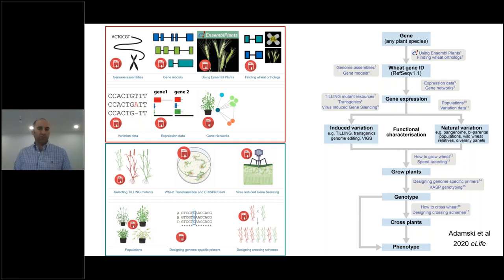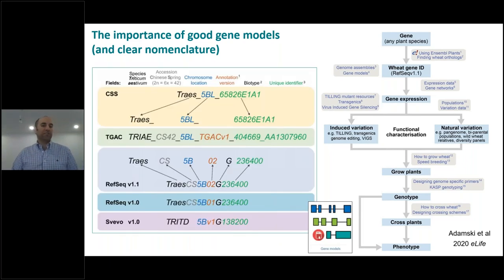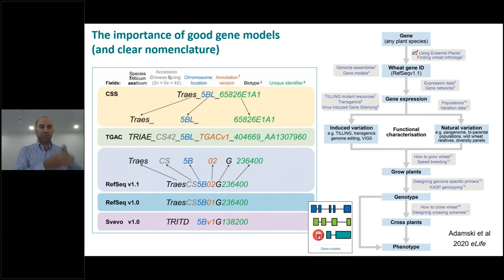One of the critical things is that we have a common nomenclature. We had several iterations of gene models: CSS gene models, TGAC gene models, RefSeq version 1, version 1.1 gene models. Having gene models that are stable has been really important because now we can talk the same language, which is crucial when comparing studies done in Australia, China, Japan, the UK, the US, Brazil — we have the same nomenclature and can talk the same language. Having the RefSeq allows everyone to have the same map to work with.